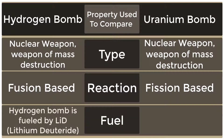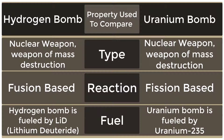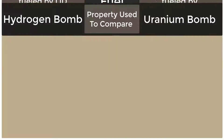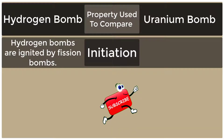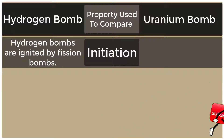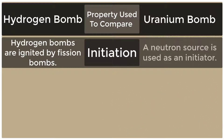Hydrogen Bomb is fueled by Lithium Deuterite, whereas Uranium Bomb is fueled by Uranium-235. Hydrogen Bombs are ignited by Fission Bombs, whereas a Neutron Source is used as an Initiator in the Uranium Bomb.